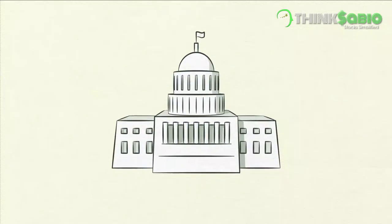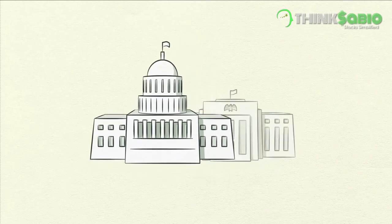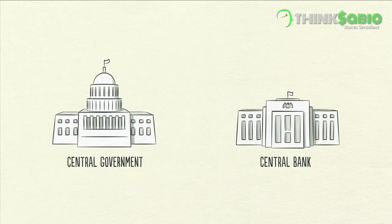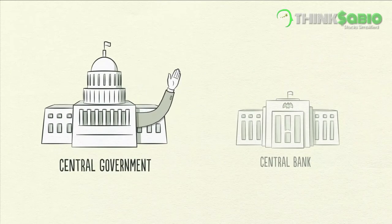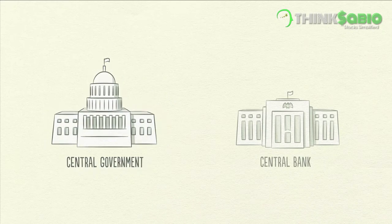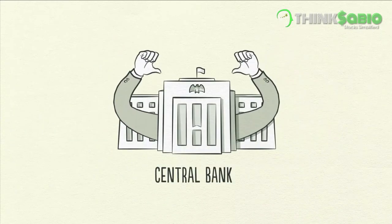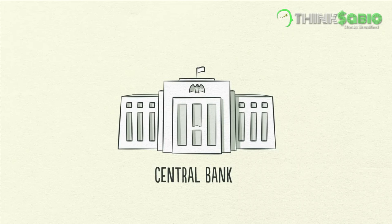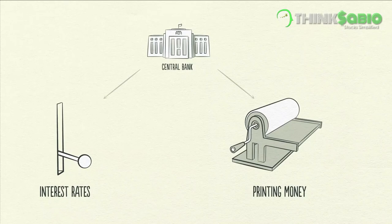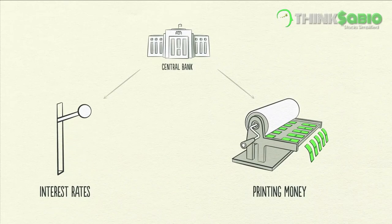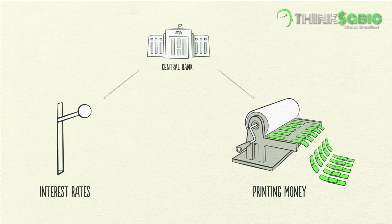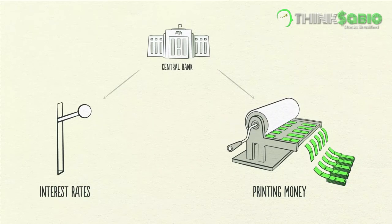The biggest buyer and seller is the government, which consists of two important parts: a central government that collects taxes and spends money, and a central bank, which is different from other buyers and sellers because it controls the amount of money and credit in the economy. It does this by influencing interest rates and printing new money. For these reasons, the central bank is an important player in the flow of credit.